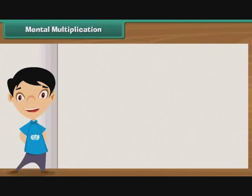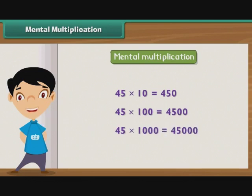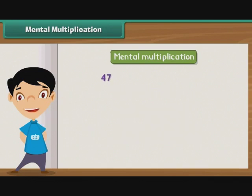Having learnt mental addition and subtraction, let us proceed to learn mental multiplication. To multiply a number by 10 or its multiples, add the same number of zeros to the result as in the multiplier. To multiply a number by 9, multiply it by 10 first and then subtract the number itself from the result. For example, to multiply 47 by 9, first multiply 47 by 10 to get 470.